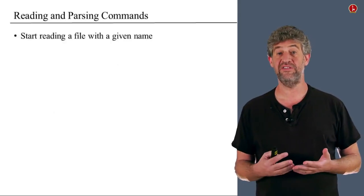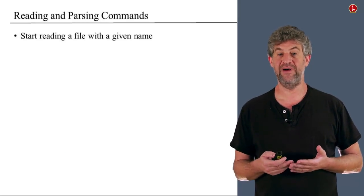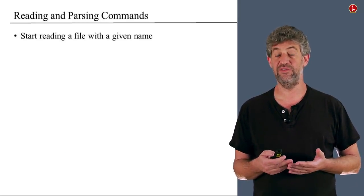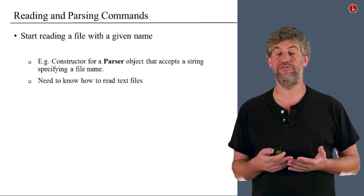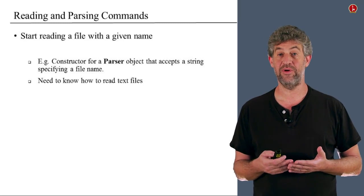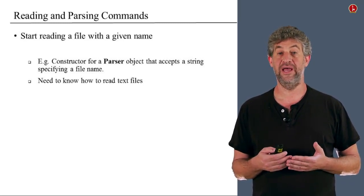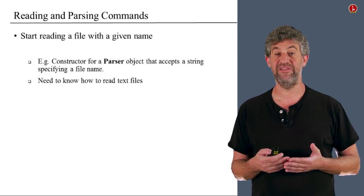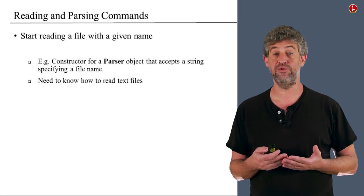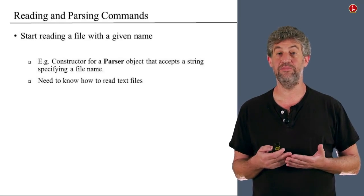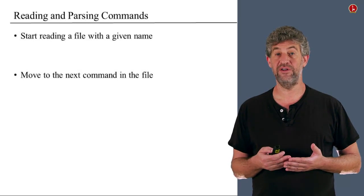The only thing it needs to understand is the format of the input language and how it breaks into different components. It needs to be able to read a file with a given name — to start reading a file. For example, if you implement it as a class in some programming language, you may want the constructor to accept the file name and open the file for reading. You will need to know how to handle and read text files in the language you're implementing the assembler in.